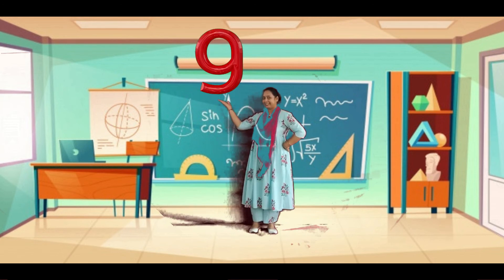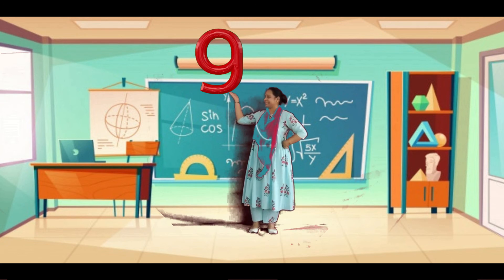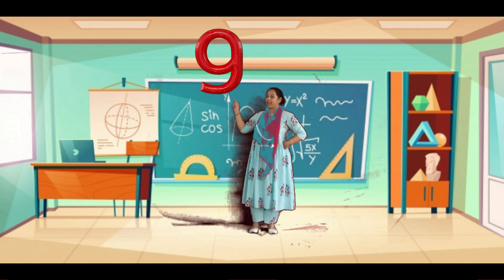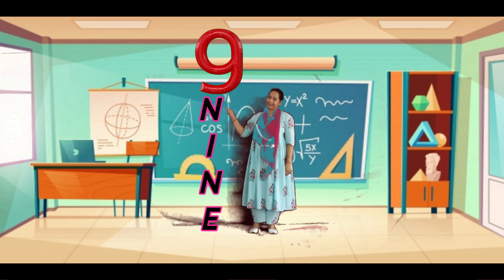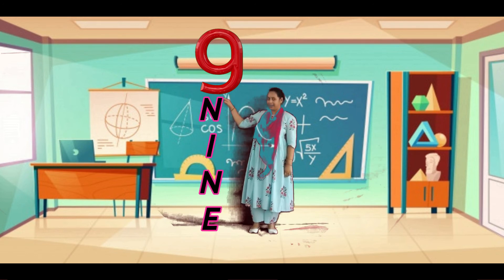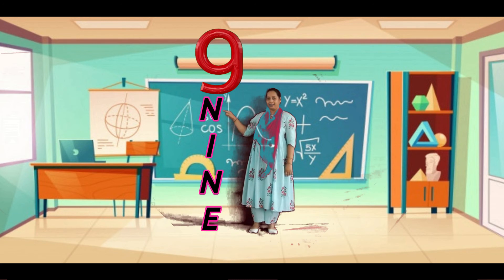Which number children? Yes, yes children — it is 9! Number 9 spelling: N, I, N, E. Nine.